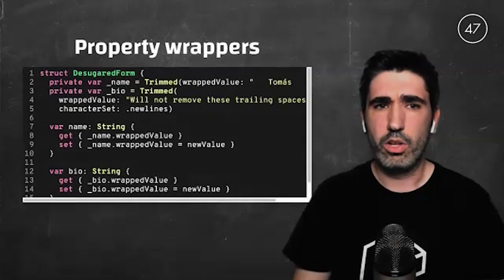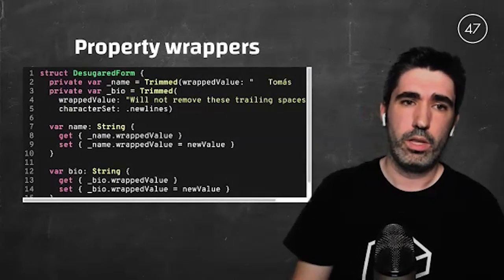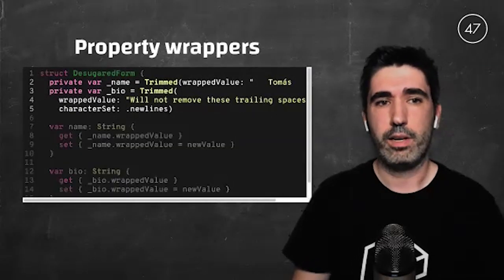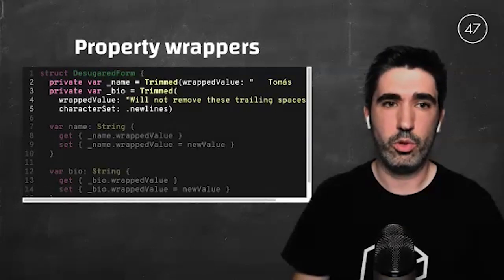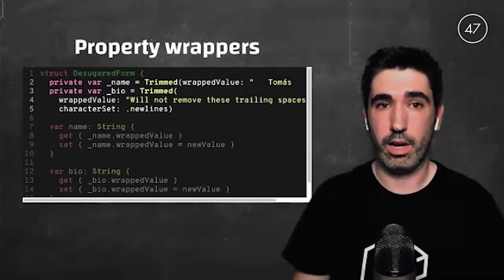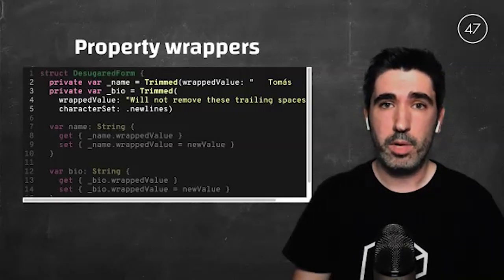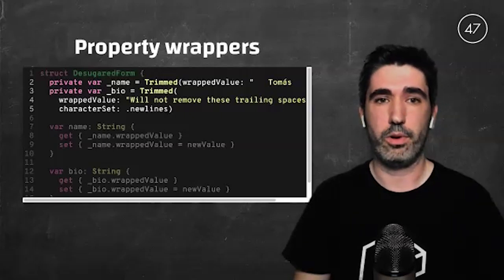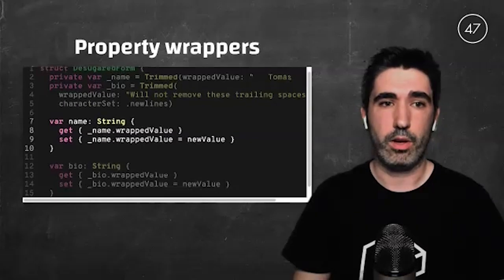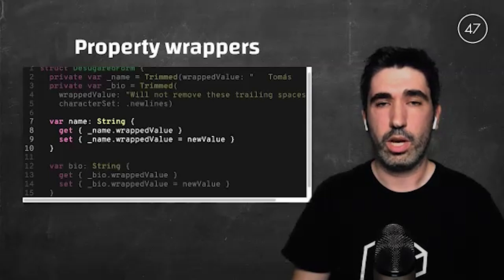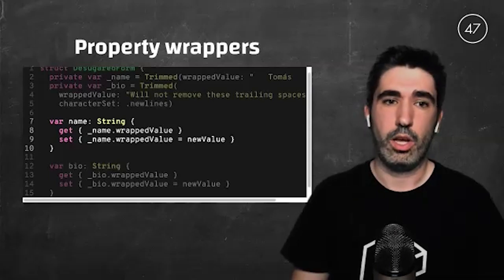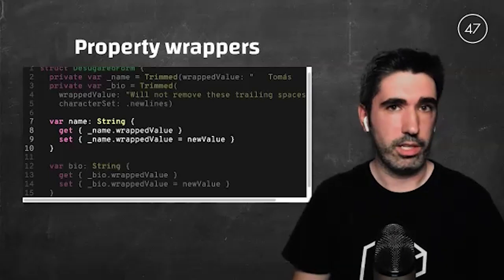How does this magic work? Behind the scenes, the compiler is creating two properties referring to the exact property wrappers we have created, with the same name but prefixed with an underscore. Then we have computed variables for each property that act as a proxy to access the wrapped value whenever we get or set it.